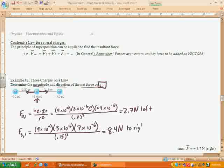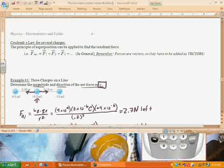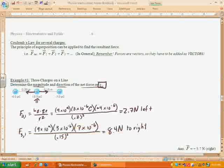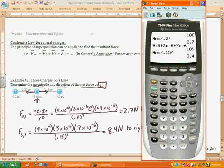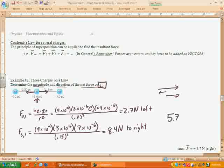Now, the question is asking for the net force. So, the net force is going to then be the sum of the two forces acting on it. Now, this is a vector. These are vectors which means we have to add them as vectors. So, 2.7 to the left and then 8.4 to the right is going to leave us with 8.4 minus 2.7 which is 5.7. So, 5.7 Newtons. It is a vector. So, we have to name the direction. So, that would be to the right.